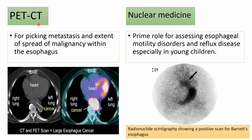Regarding PET: it is used for detecting metastasis and assessing the extent of spread of malignancy within the esophagus. Regarding nuclear medicine: the prime role is for assessing esophageal motility disorders and reflux disease, especially in young children. This image shows radionuclide scintigraphy showing a positive scan for Barrett's esophagus.